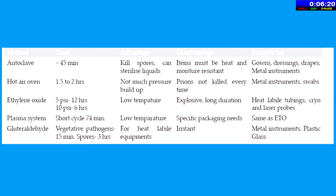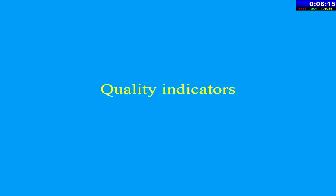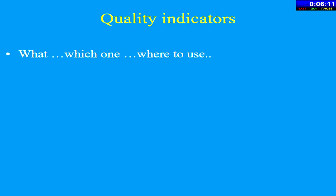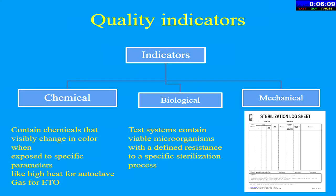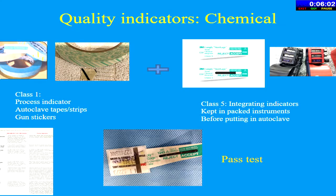The Class 2 Bowie-Dick indicator shows that air removal from the autoclave is adequate. The most important indicators are biological indicators — many of us don't use them, but it is recommended they be used at least once a week. These indicators contain spores of resistant organisms. Once exposed to high temperature autoclave or ETO cycles, the spores should be killed. The vial is placed in the autoclave; after processing, the spore area is crushed, spores fall onto the culture media below, and within one to two hours you can see whether sterilization is occurring adequately. No color change indicates adequate sterilization.